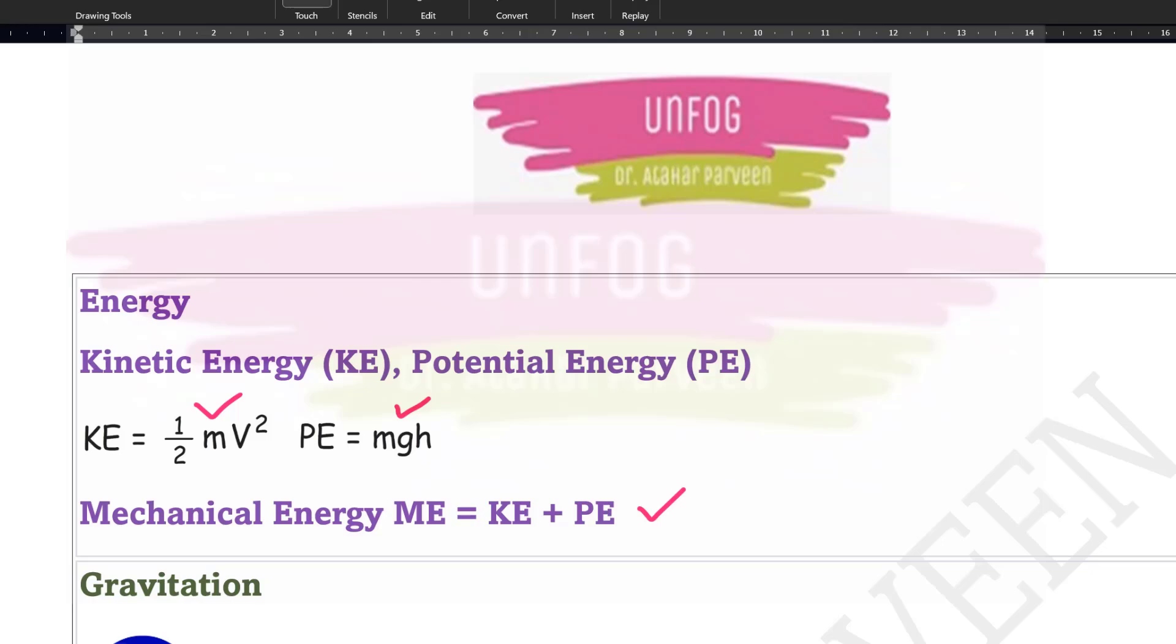Of course, here m is mass of the body, v is velocity of the body with which it is moving and g is acceleration due to gravity, h is height at which the body is having its position. Kinetic energy is the energy possessed by a moving object and potential energy is because of its position.